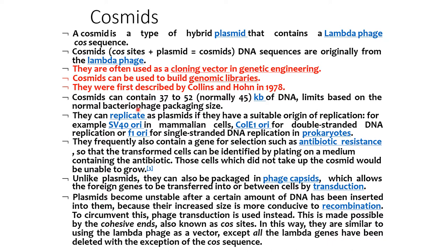Cosmids can contain 37 to 52, normally 45 KB, of DNA limits based on the normal bacteriophage packaging size. They can replicate as a plasmid if they have a suitable origin of replication.